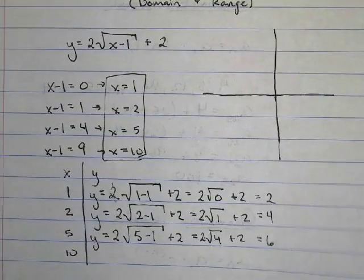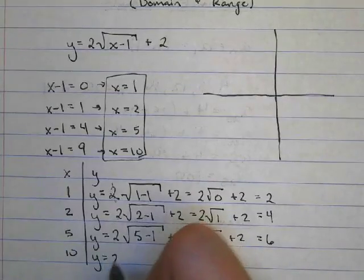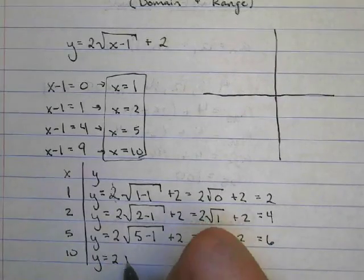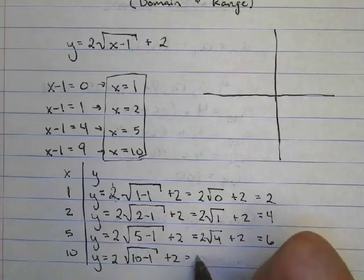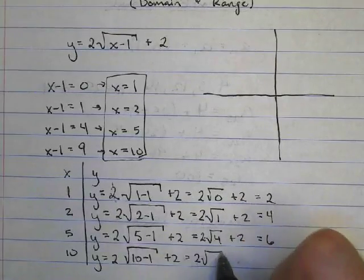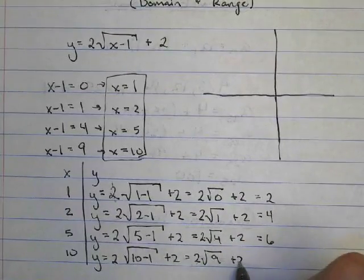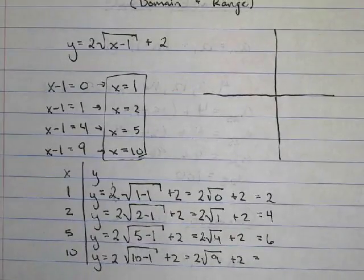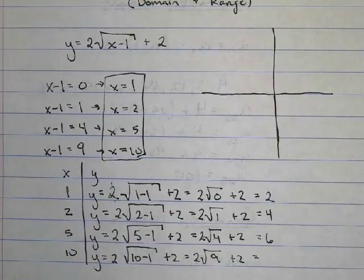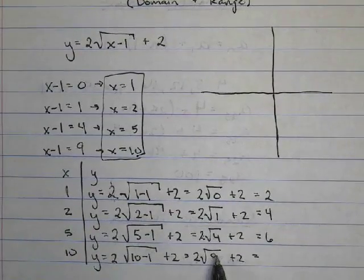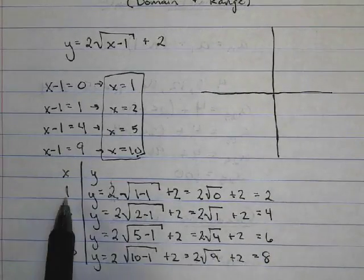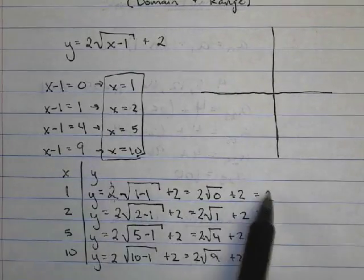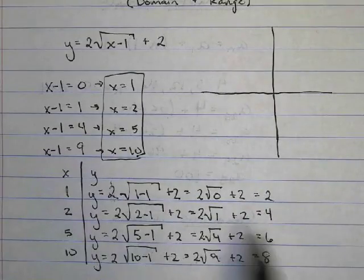We have one more to do. y equals 2 times the square root of 10 minus 1 plus 2, which is 2 times the square root of 9 plus 2. The square root of 9 is 3, times 2 is 6, plus 2 is 8. Now I have all 4 points to graph.